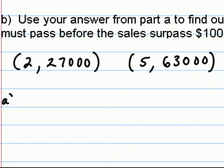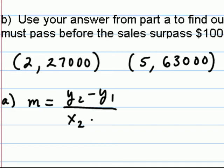And so as we look at part A, we're to find the slope of the sales line. Here, we'll use the slope formula: m equals y sub 2 minus y sub 1 over x sub 2 minus x sub 1.